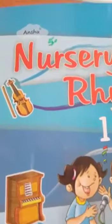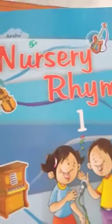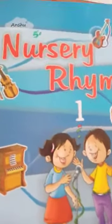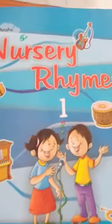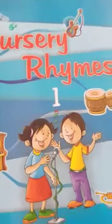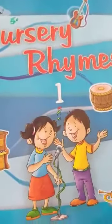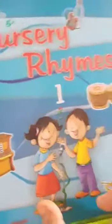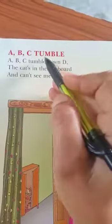Hello nursery class kids. Today we are going to teach you nursery rhyme. So take out your nursery rhyme book. And the first rhyme is ABC Tumble.